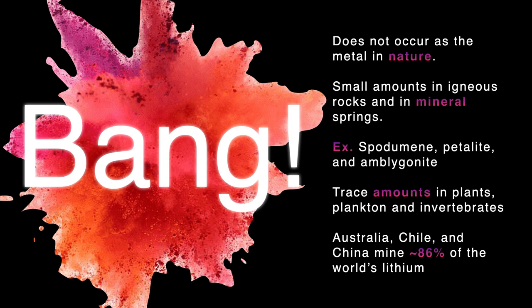When the Big Bang happened, a large amount of lithium was spread across the galaxy. While it doesn't occur as the metal in nature, it is found combined in small amounts in nearly all igneous rocks and in the waters of many mineral springs. Spodumene, petalite, lepidolite, and amblygonite are all important minerals that contain lithium. You can also find trace amounts in plants, plankton, and invertebrates, which are animals without backbones.